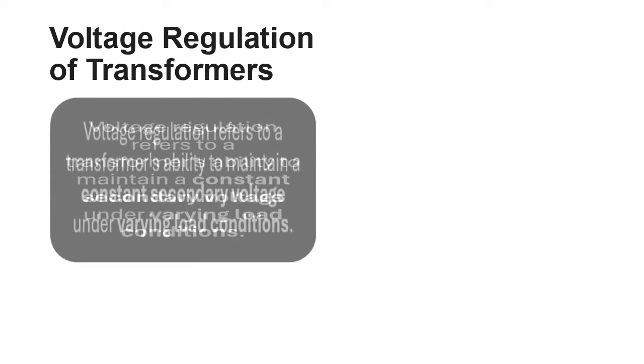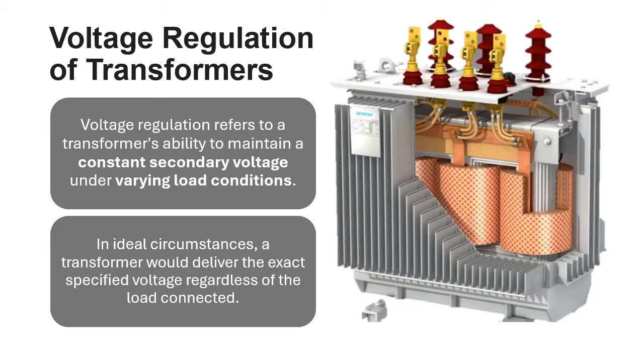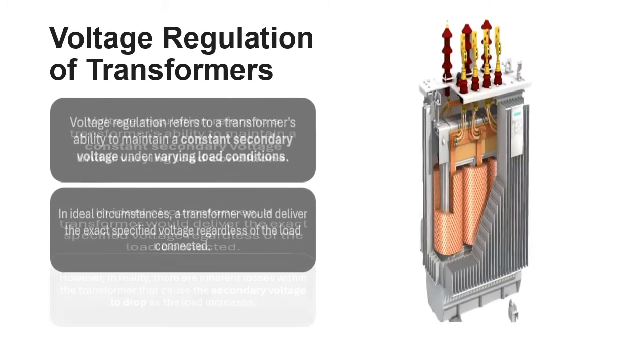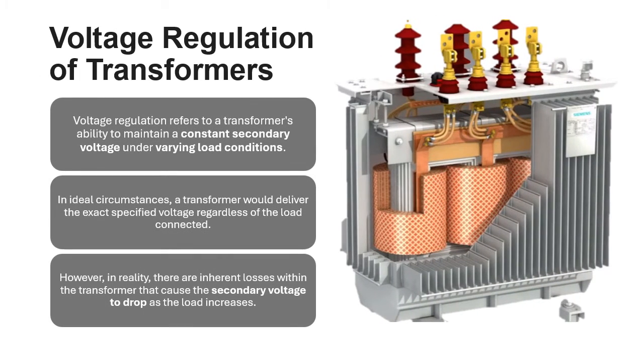In ideal circumstances, a transformer would deliver the exact specified voltage regardless of the load connected. However, in reality, there are inherent losses within the transformer that cause the secondary voltage to drop as the load increases.